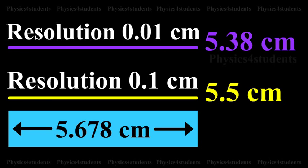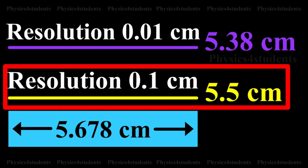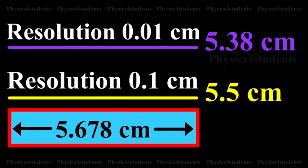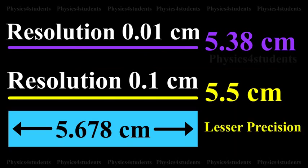We find that the first measurement is more accurate as it is closer to the true value, but it has less precision.